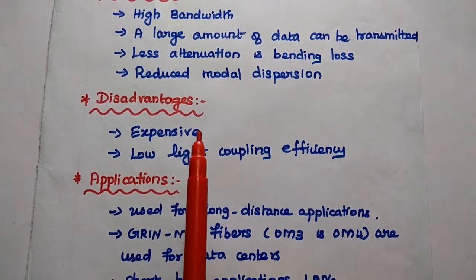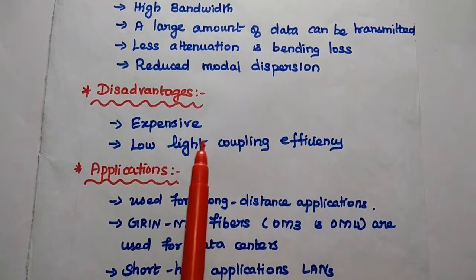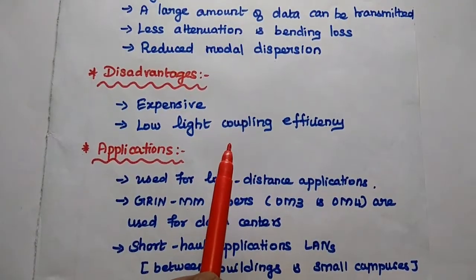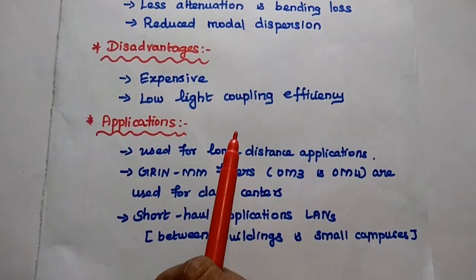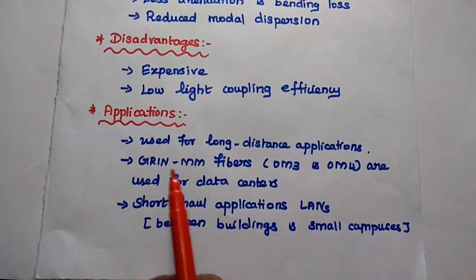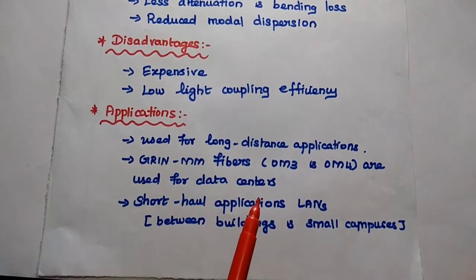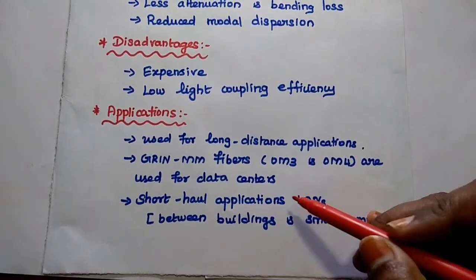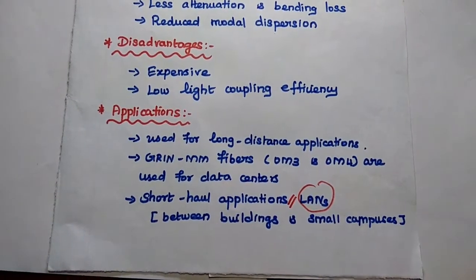Graded index fiber also has some disadvantages: it is expensive — costlier than single-mode fiber — and it has low light coupling efficiency since it supports multi-mode propagation. For applications, graded index fiber is used for long-distance applications. Graded index multi-mode fibers like OM3 and OM4 are used for data centers. It is mainly used for short-haul applications such as LANs, between buildings, and small campuses.